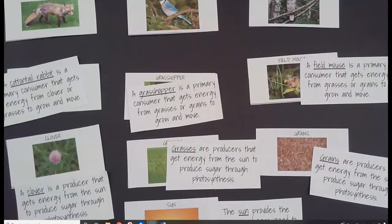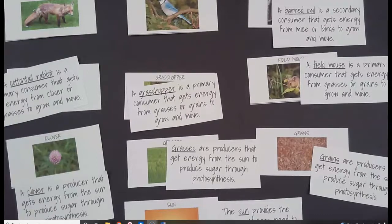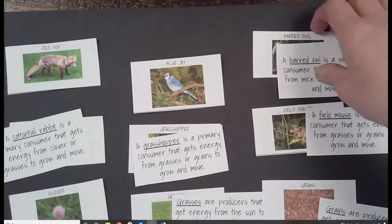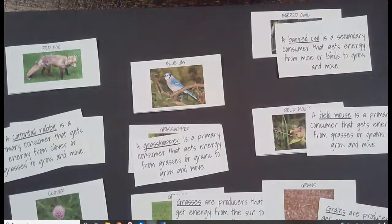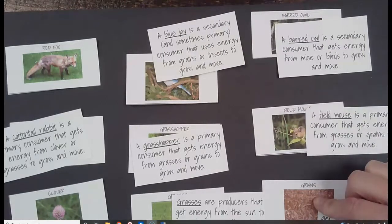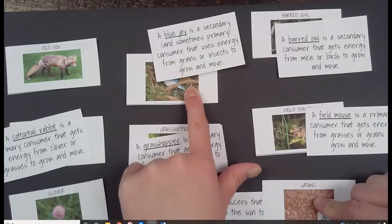The barred owl is a secondary consumer that gets its energy from mice or birds. I might want to sneak my blue jay down a little bit and my barred owl up a little bit because it comes from two different things. A blue jay is a secondary and sometimes primary consumer that uses energy from grains or insects, which would be our grasshoppers. So I could draw an arrow from the grains and grasshoppers to the blue jay.